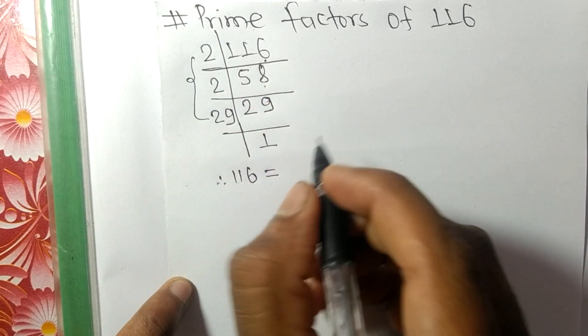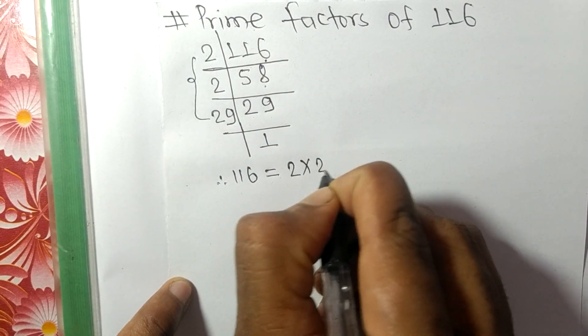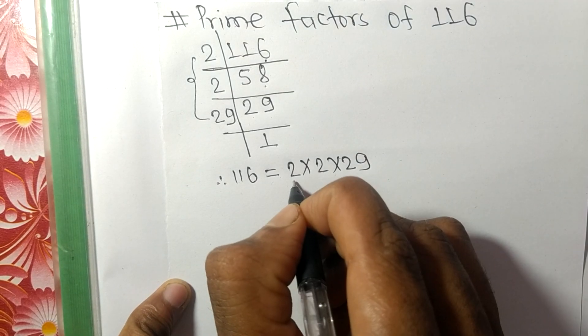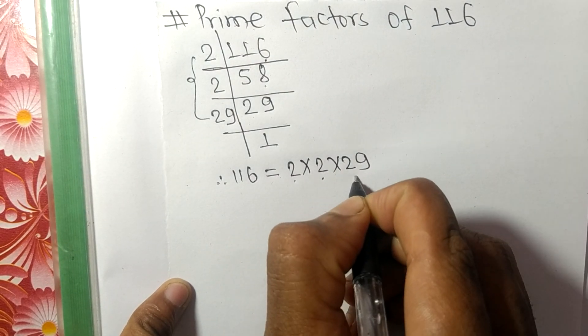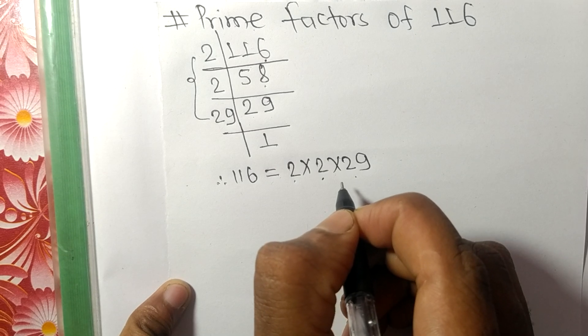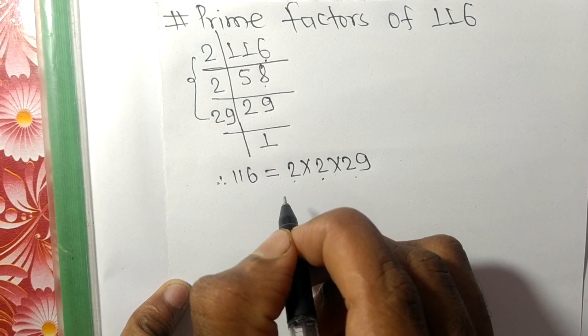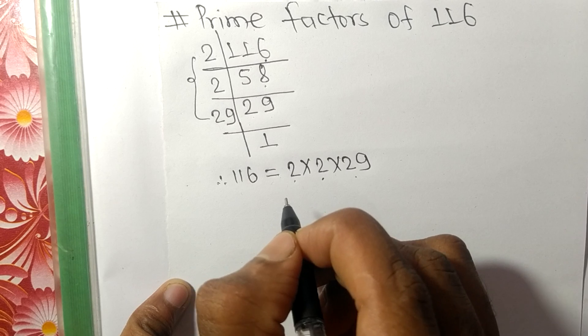2, 2, and 29 are the prime factors of 116. This much for today, and thanks for watching.